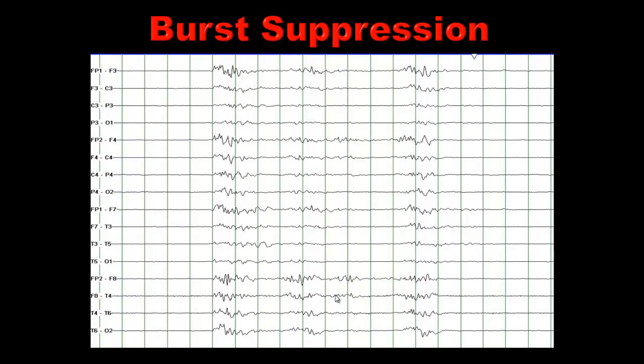Burst suppression can be chemically induced. In patients who are in status epilepticus, sometimes they will be given medications that produce this pattern — high doses of Propofol, Pentobarbital, other benzodiazepines, or general anesthetics. If it is chemically induced, it does not necessarily indicate a poor prognosis. But if you see a burst suppression pattern in severe anoxic brain injury in the absence of any medications, it tells you of a poor prognosis for functional recovery. Likewise, in Ohtahara syndrome, burst suppression indicates a relatively poor prognosis. Before making any prognostic determinations, the patient needs to see a neurologist or pediatric neurologist who is an expert in this area.